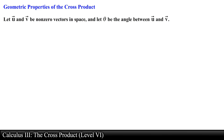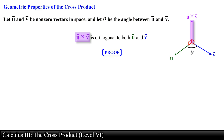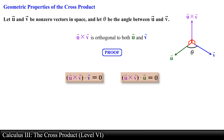Let vector u and vector v be nonzero vectors in space, and let theta be the angle between vector u and vector v. Then vector u crossed with vector v is orthogonal to both vector u and vector v. This property was illustrated in the first video of this series, and now we want to formally prove it. In order to show orthogonality, we will make use of the dot product — if both vectors are orthogonal to one another, the dot product should equal zero.